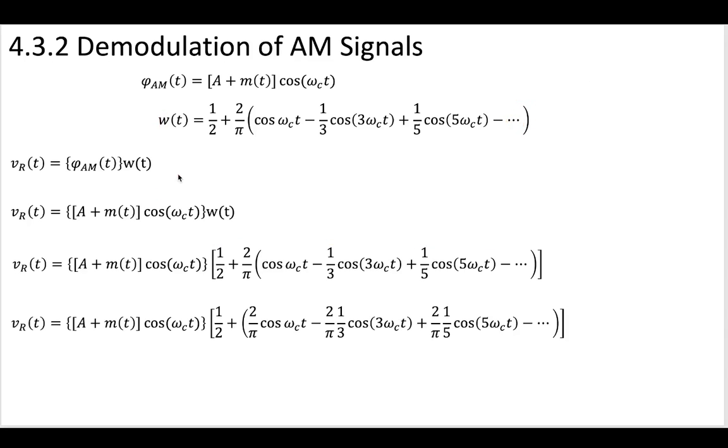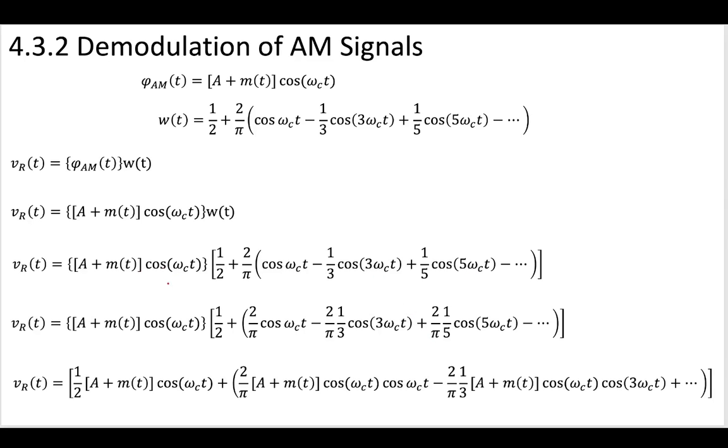So we've substituted these in. Now we have two signals being multiplied against each other, and we're starting to see that there's a whole bunch of these cosine waves at our carrier frequency. All right, so now let's distribute this 2 over pi throughout this, so we're distributing these pi terms through.